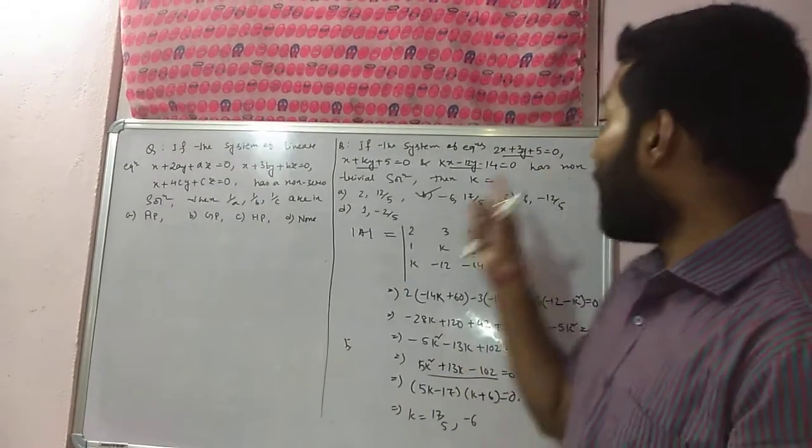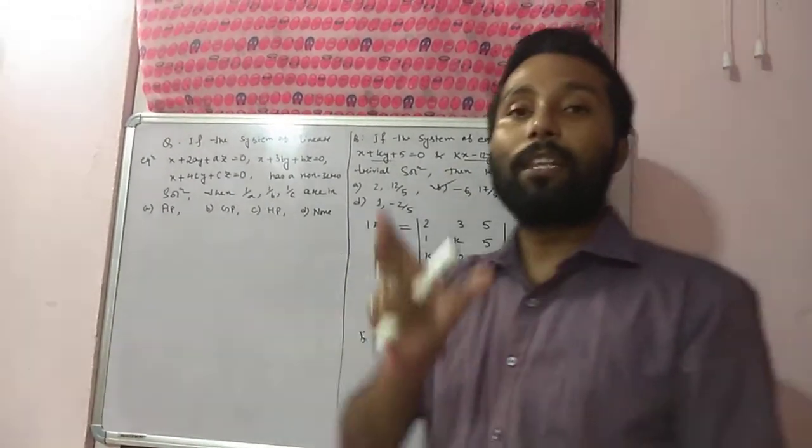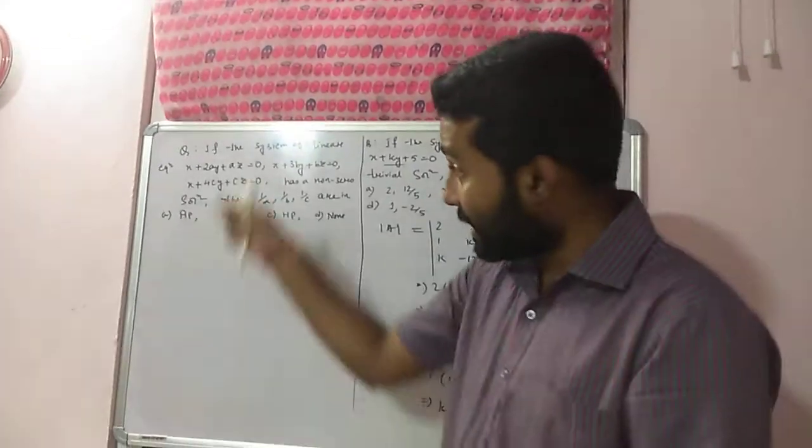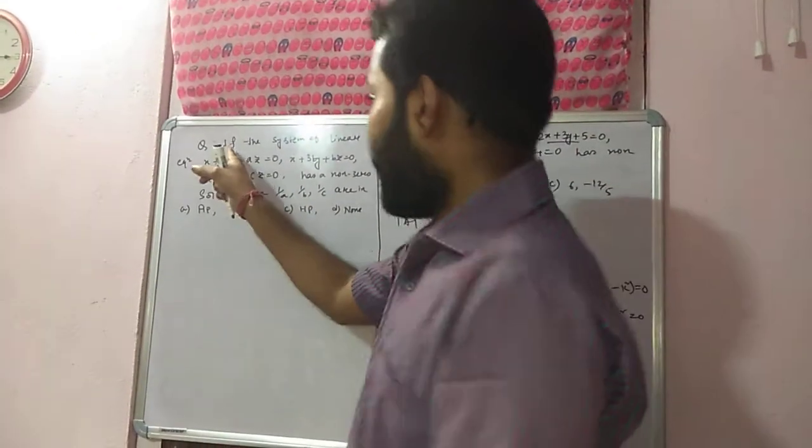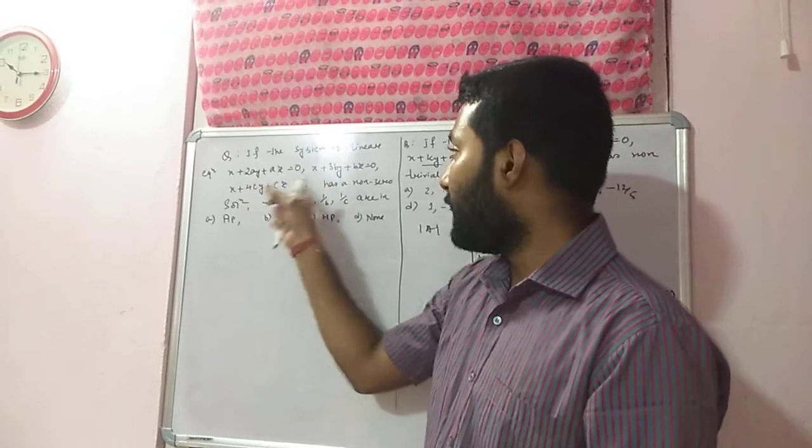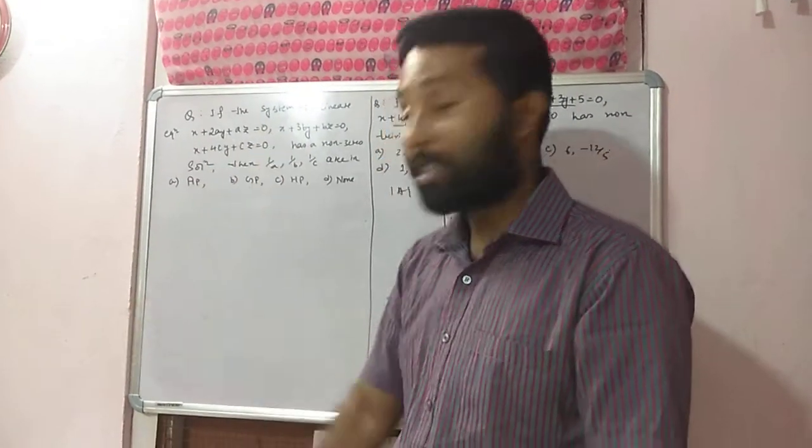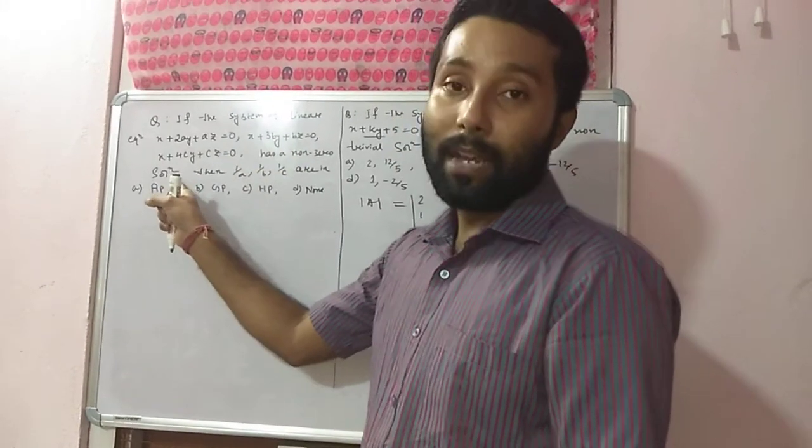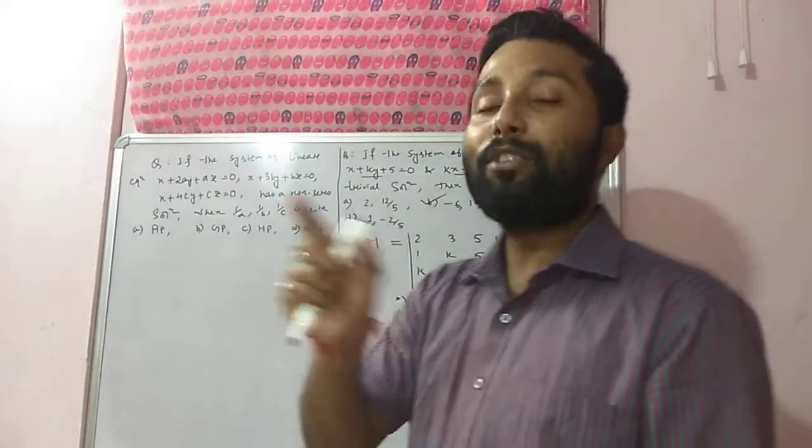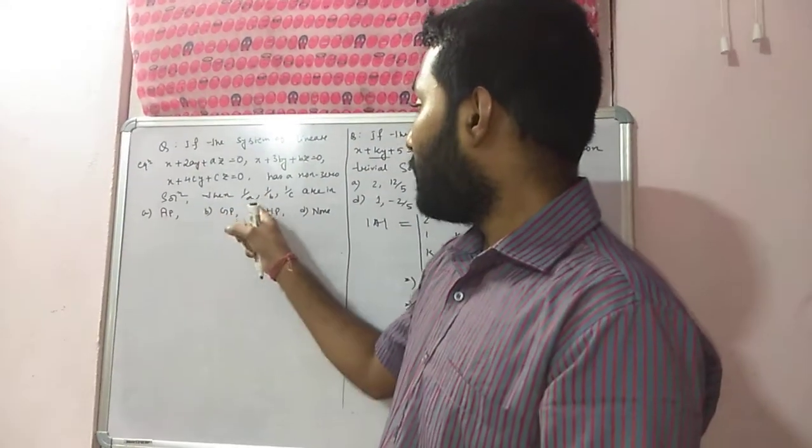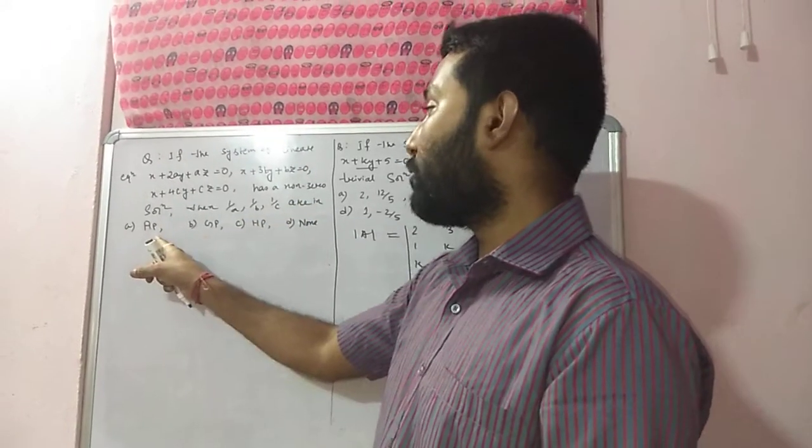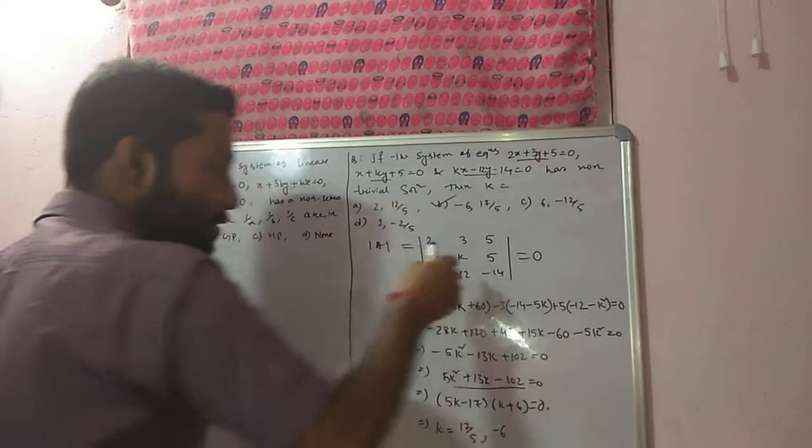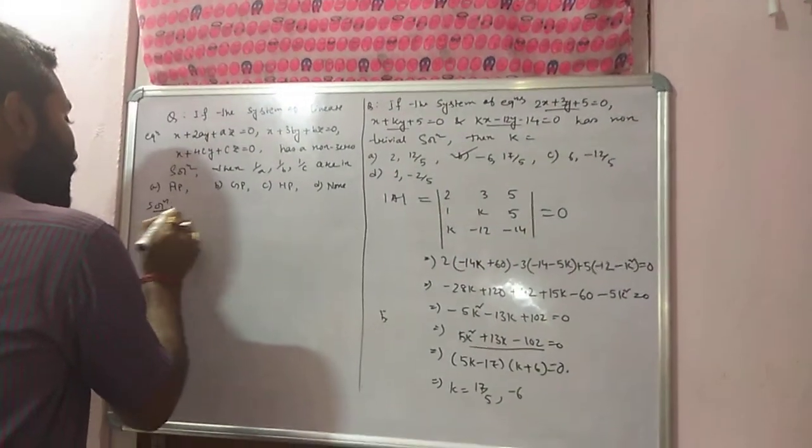As well as for non-zero solution. If the system of linear equations, here also three linear equations are given, and all three are homogeneous equations, has non-zero solution, then 1 by A, 1 by B, 1 by C are in arithmetic progression, geometric progression, harmonic progression, or none of this. Same condition we have to use.